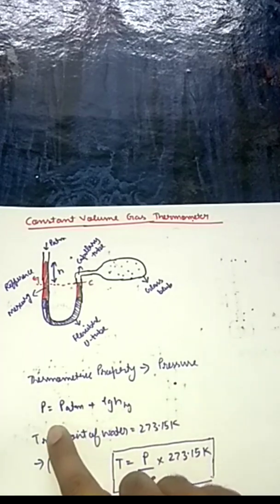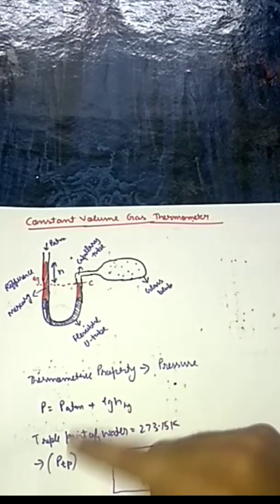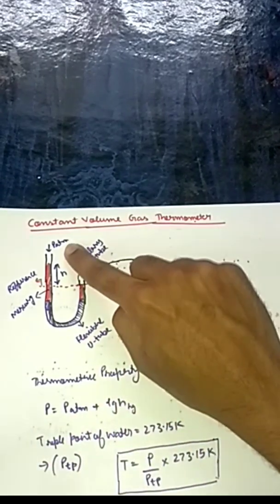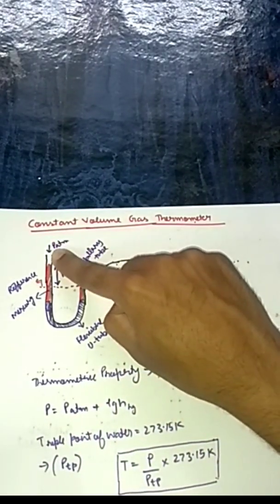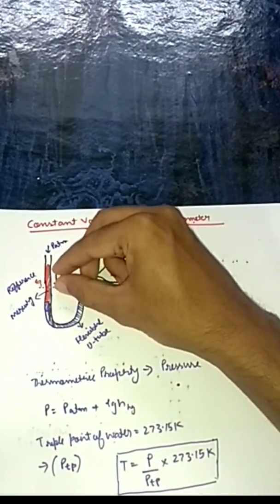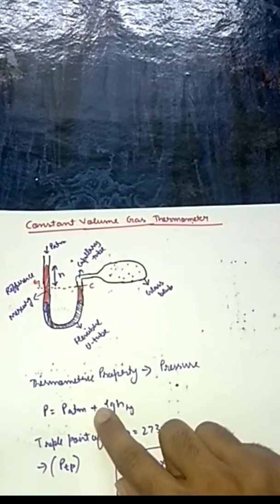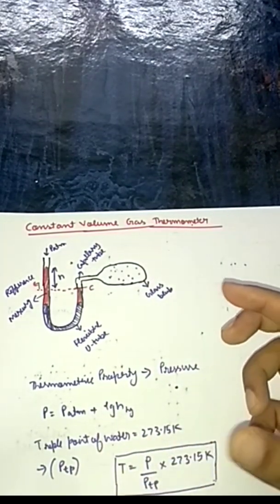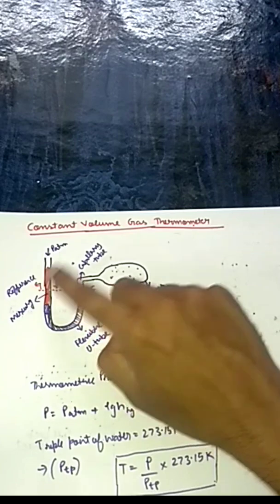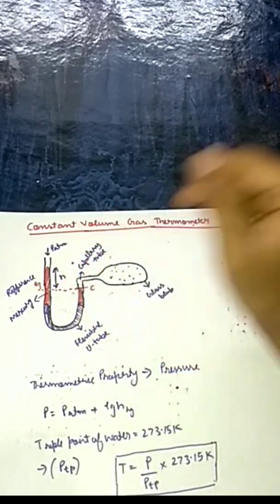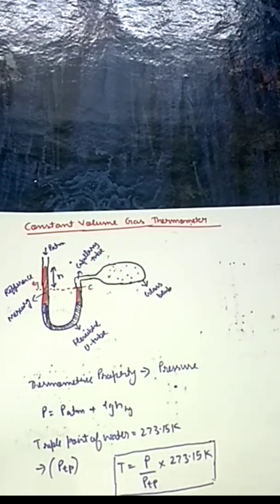How do you find out the pressure? The pressure P is equal to the atmospheric pressure plus ρgh, where ρ is the density of mercury, g is the acceleration due to gravity, and H is the height of the mercury column.